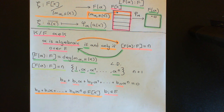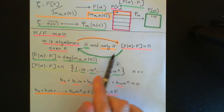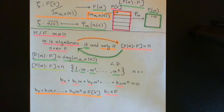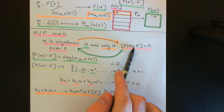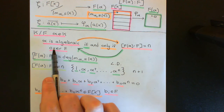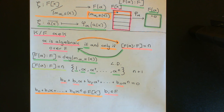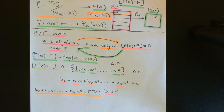So I've now proven the definition of alpha being an algebraic element over F — the backwards if direction is proven. We now know that alpha is algebraic over a field capital F if and only if it is an utterly equivalent statement to saying that the degree of the field generated by alpha over F is equal to some finite value.